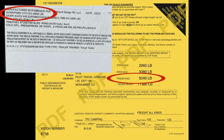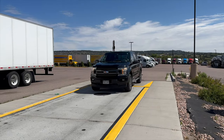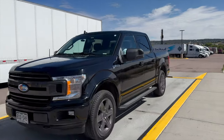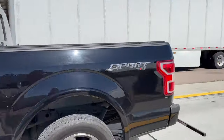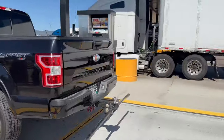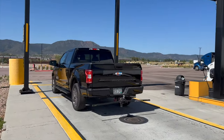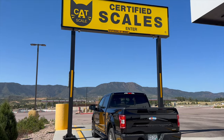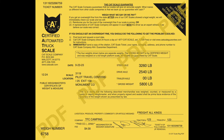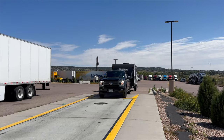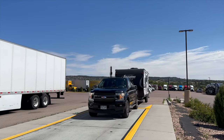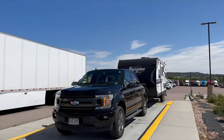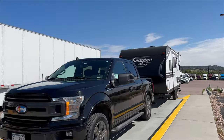The trailer GVWR is usually found on a sticker on the side of your trailer. If you choose, you can also determine the hitch weight — in other words, the weight the trailer is putting on your truck — using the CATSCALES. To do this, weigh the truck without the trailer, then weigh the truck with the trailer attached. The second weighing is only three or four dollars, so bring your trailer with you and just park it when you're weighing only the truck.